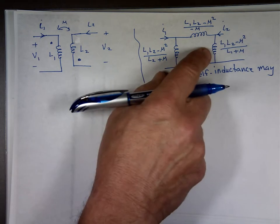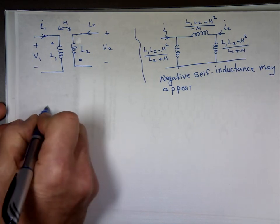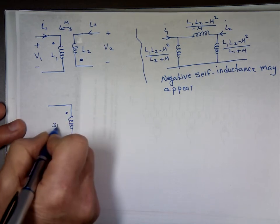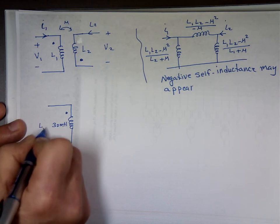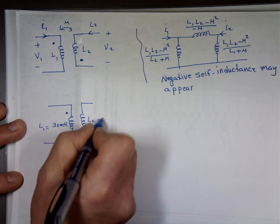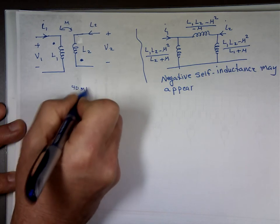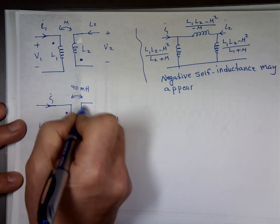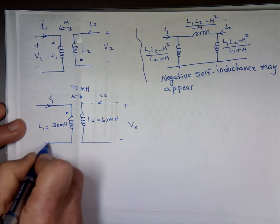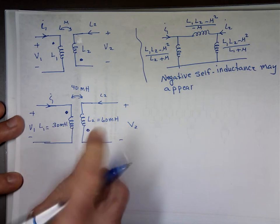And the answer for that will be this one. So if we take the same problem, just change the polarity on it. And this was 30 millihenry. This is L1. This is L2, which is 60 millihenry. And this is the 40 millihenry, the mutual inductance. This is I sub 1. This is I sub 2. This is V2. This is V1. And my dot here was right there. That's the only difference. The dot was down here for this.